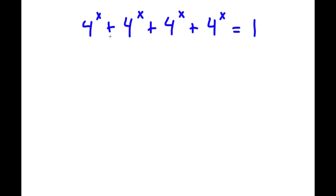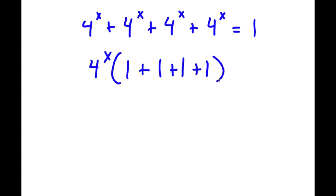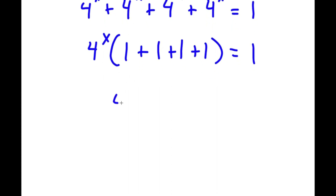In this problem I have 4 to the power of x plus 4 to the power of x plus 4 to the power of x plus 4 to the power of x is equal to 1. To solve this, the first thing I'm going to do is factor out 4 to the power of x from the left-hand side. So I have 4 to the power of x times (1 plus 1 plus 1 plus 1) equal to 1. Now 1 plus 1 plus 1 plus 1 is simply 4, so I have 4 to the power of x times 4 is equal to 1.